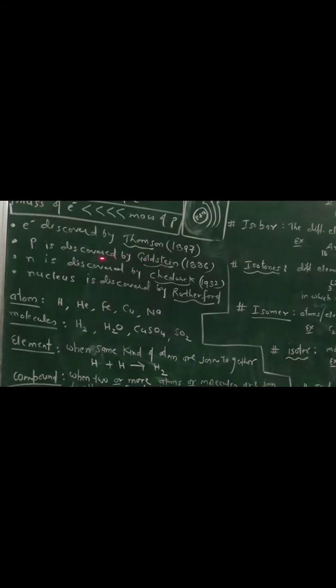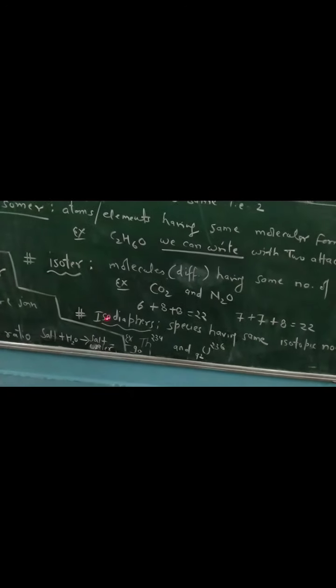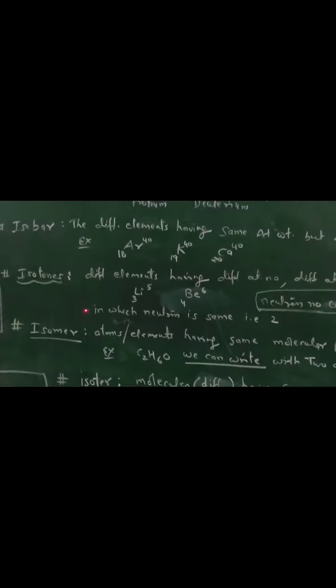The neutron discovery was in 1932. The nucleus, which we discussed, is made of proton and neutron and is at the center of every atom. Remember the scientist's name for objective questions. These were basic things needed for 9th grade. After that, there are terms I have written: atom, molecule, element, compound, mixture, allotropes, isotopes, isobar, isotone, and isomer. These names sound similar but have different meanings.